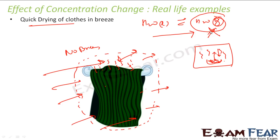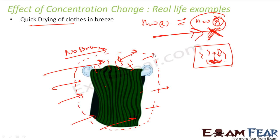So the equilibrium reaction here is H₂O liquid to H₂O gas. When there is no wind, the system reaches a semi-equilibrium and it takes time to dry. But the moment there is a breeze, it removes the H₂O gas, the concentration becomes less, and the reaction moves in the forward direction — so your clothes get dried easily.